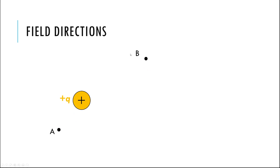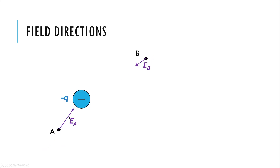Now if I have a positively charged object, the electric field looks different. If I put a positive charge at point A, it would be repelled by the other positive charge, so the field vector points away. The quick thing to remember is: electric field lines always point away from positive charges and towards negative charges — just because of the convention that they show which way a positive test charge would be pushed.